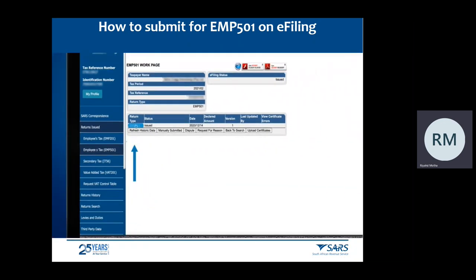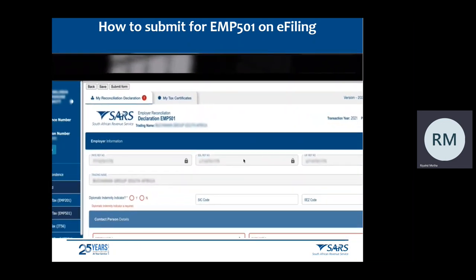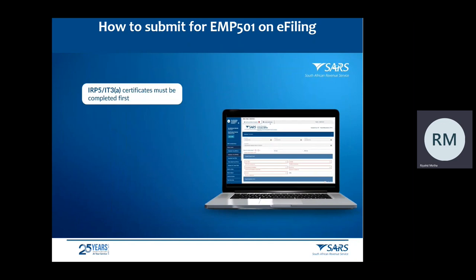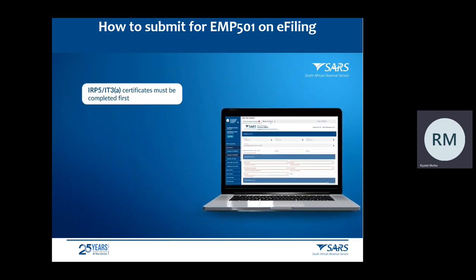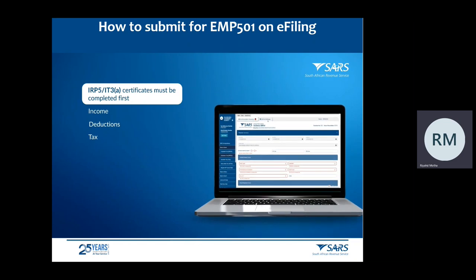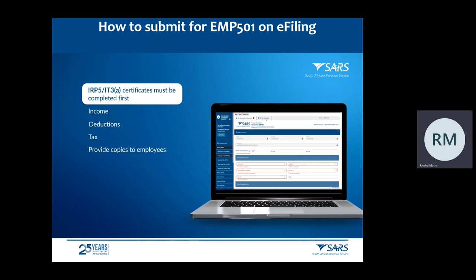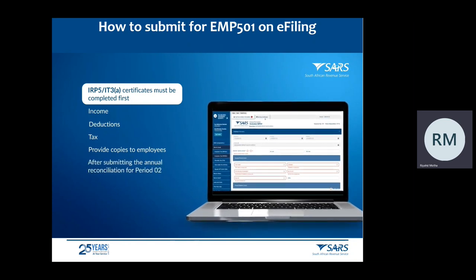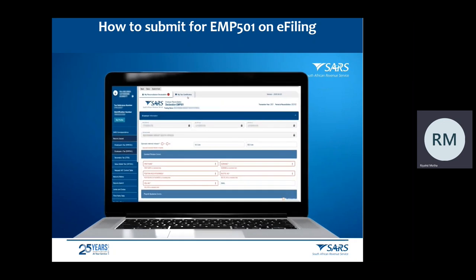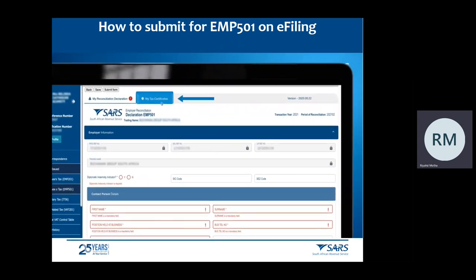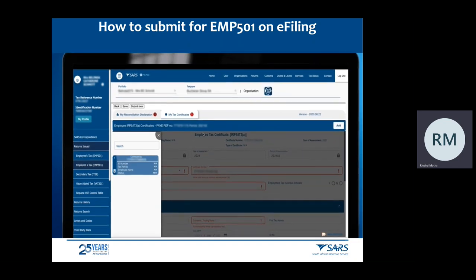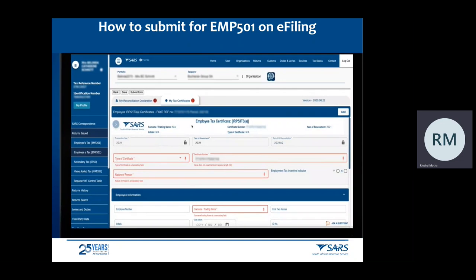To open the return, click on the EMP501 link. You will now be able to complete the tax certificates once the EMP501 is opened. Before completing the EMP501 for interim and annual submissions, the IRP5/IT3A certificates must be completed first. The IRP5/IT3A certificates should reflect the income, deductions and tax as calculated at this point. It is important to note that on eFiling, employers can only file a reconciliation containing a maximum of 50 IRP5/IT3A certificates.